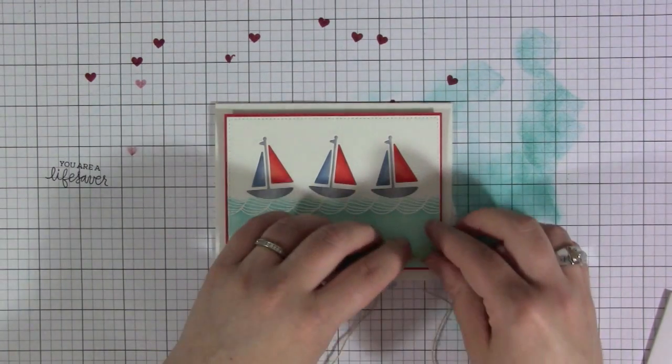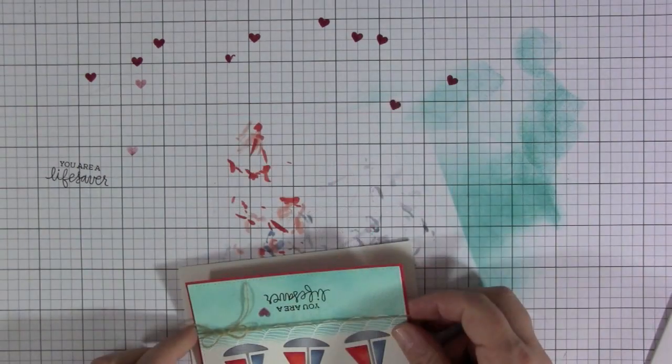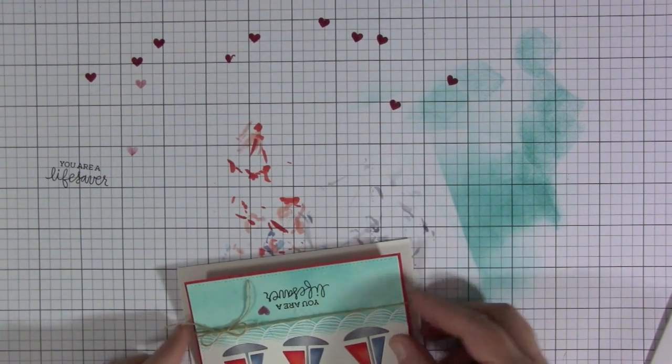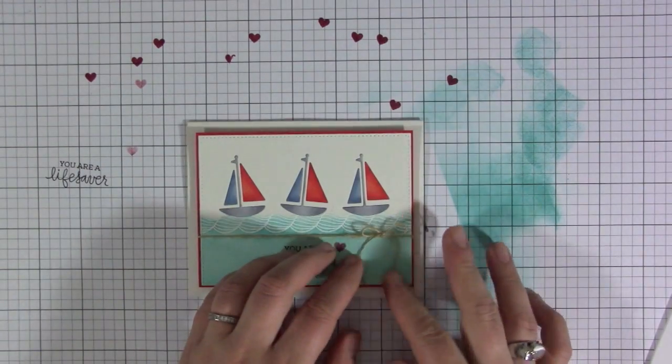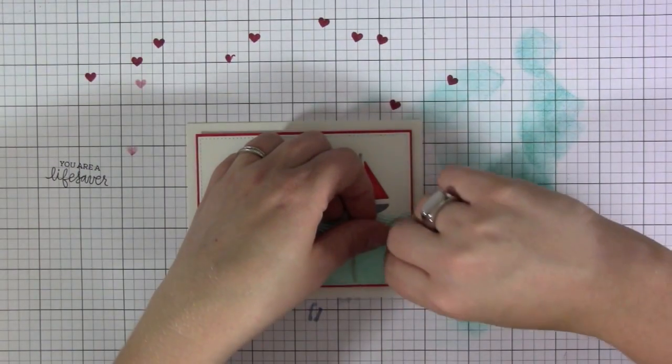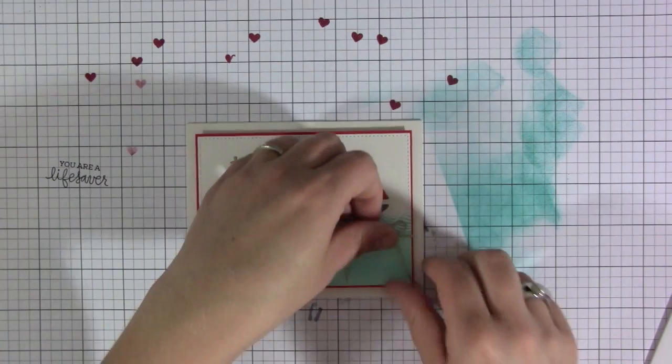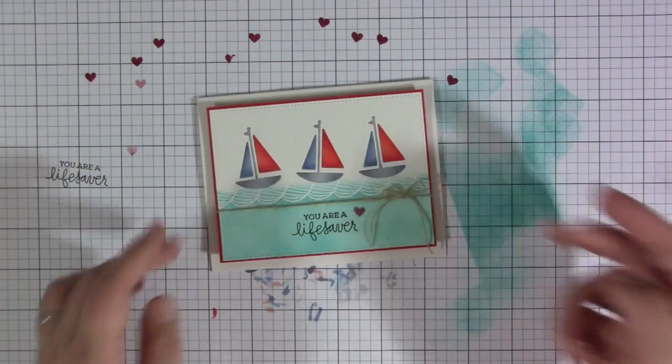I didn't like it so low on the card, so I ended up lifting up the bottom part of that panel that we have adhered to the card base. I'm just going to slide that twine up so that it's in the middle area. I just thought that it was more pleasing to the eye to have it directly under the water waves. Once I have that there, I'm just going to position the strings how I want them, and that completes the card for today.